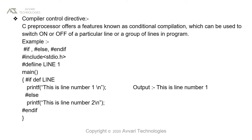The third type is compiler control directives. The C preprocessor offers features known as conditional compilation, which can be used to switch on or off a particular line or group of lines in a program. For example, the directives used are: #if, #else, #endif. Consider: #include <stdio.h> and #define LINE 1.